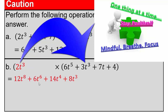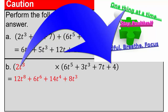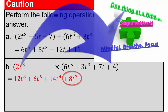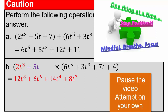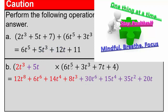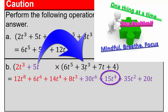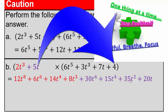So 2 times 3 is 6, and t cubed times t cubed gives t to the 6th. 2 times 7 is 14, and t cubed times t gives t to the 4th. 2 times 4 is 8, and we keep the t cubed. Once we do that part, we uncover the next component — plus 5t. So 5t times 6t to the 5th gives 30t to the 6th. 5t times 3t cubed gives 15t to the 4th. 5 times 7 is 35, t times t gives t squared, so 35t squared. 5 times 4 is 20t.